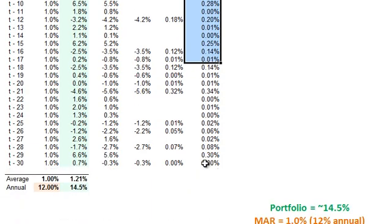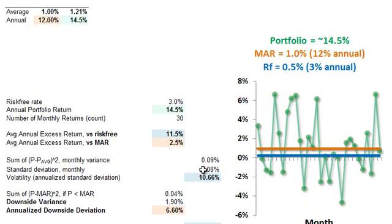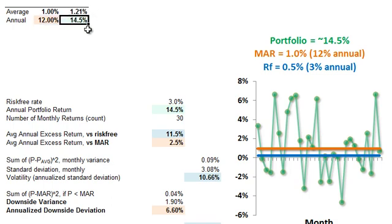Now I move down to the calculation of the Sortino. Our annual minimum acceptable return or hurdle is 12%, and our annual portfolio return is approximately 14.5%. For all those simulated monthly returns, the average monthly return was about 1.21%, giving us an annual portfolio return of roughly 14.5%.